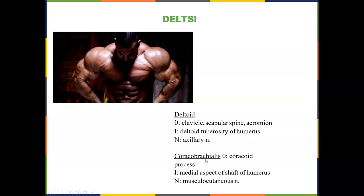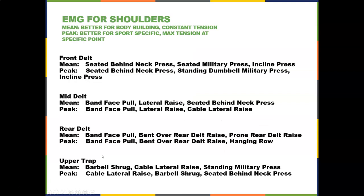The coracobrachialis originates from the coracoid process and inserts on the medial aspect of the shaft of the humerus — it's named for going from the coracoid to the brachium. The deltoid is named because it's deltoid-shaped, and it's innervated by the musculocutaneous nerve.